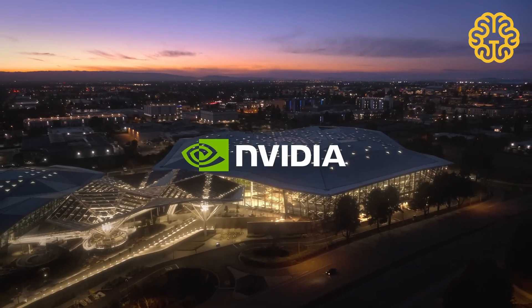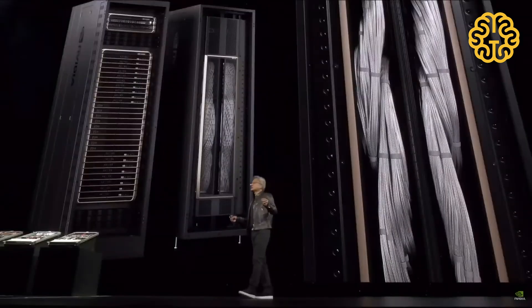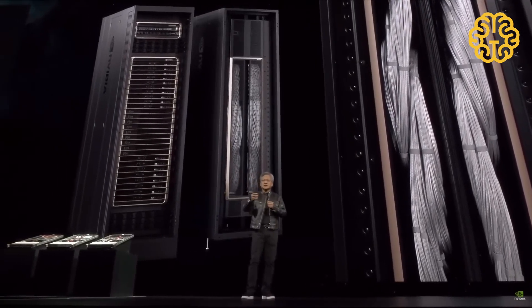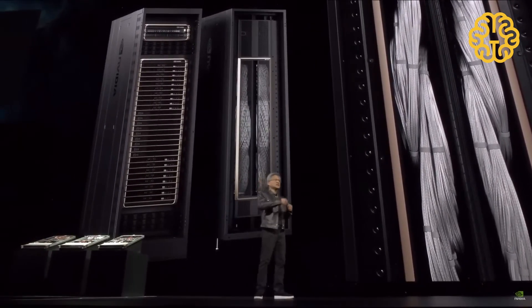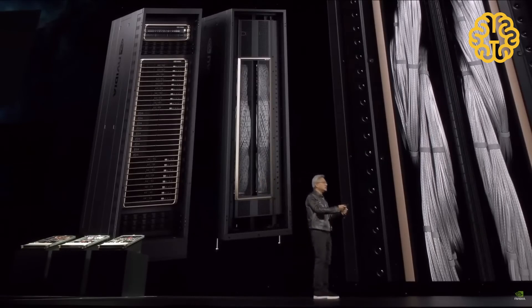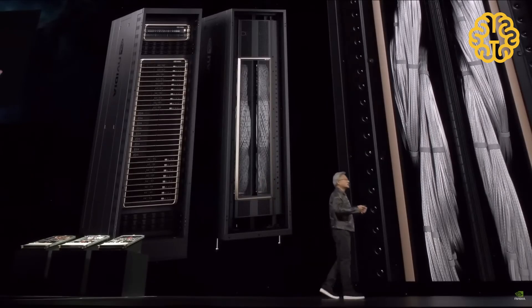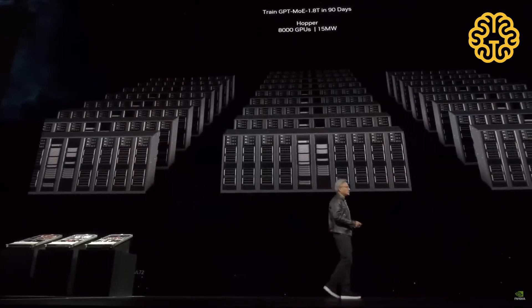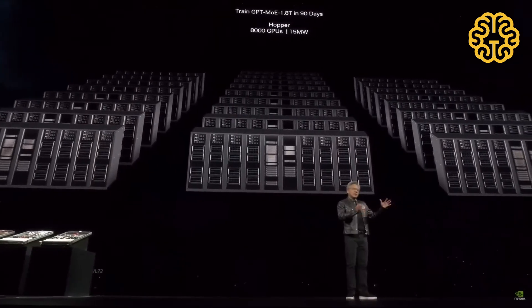Now each tray in the rack contains either 2 GB200 chips or 2 NVLink switches, with 18 of the former and 9 of the latter per rack. In total, NVIDIA says one of these racks can support a 27 trillion parameter model. GPT-4 is rumored to be around a 1.7 trillion parameter model. The company says Amazon, Google, Microsoft, and Oracle are all already planning to incorporate the NVL-72 racks in their cloud service offerings, though it's not yet clear just how many they would be purchasing.